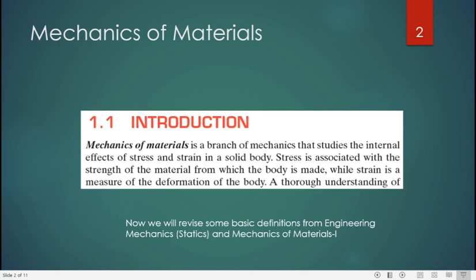What is Mechanics of Materials? It can be defined as a branch of mechanics that studies the internal effects of stress and strain in a solid body. Stress is associated with the strength of the material whereas strain is defined as a measure of deformation of the body. Now I will discuss some basic definitions from Engineering Statics and Mechanics of Materials 1.